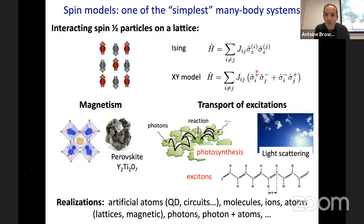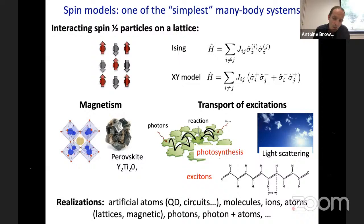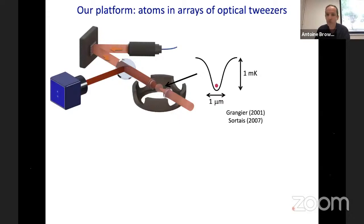To build these artificial many-body systems, you need hardware. Many platforms have been discussed in this seminar series: artificial atoms including superconducting circuits, quantum dots, molecules, and iron atoms in optical lattices interacting through magnetic interactions, as well as photons. What I'm going to discuss is our particular platform — an ensemble of atoms placed in arrays of optical tweezers.